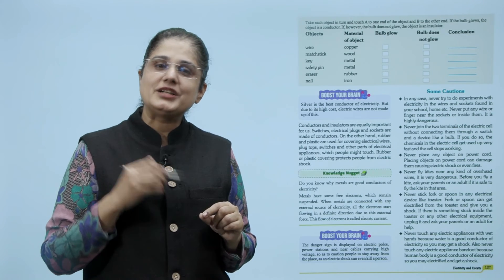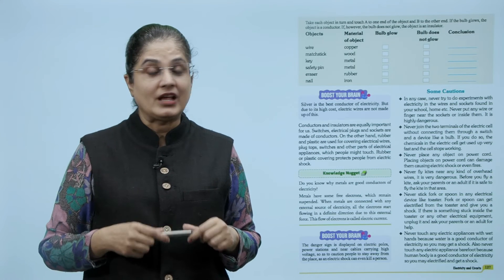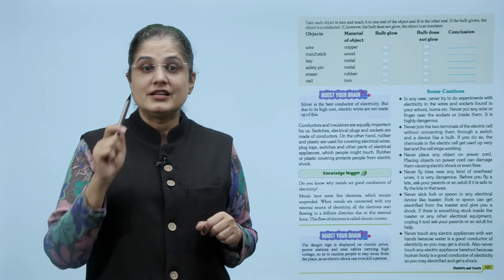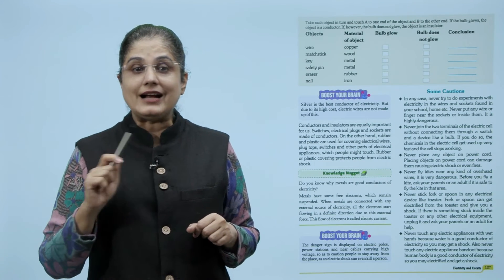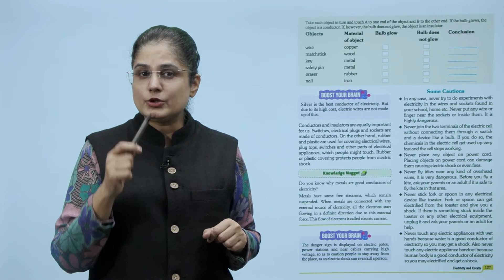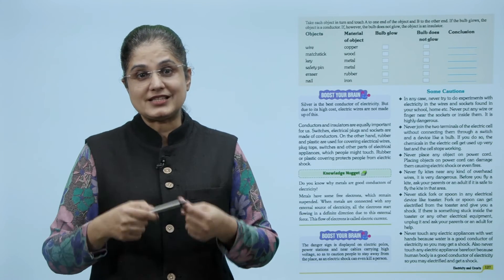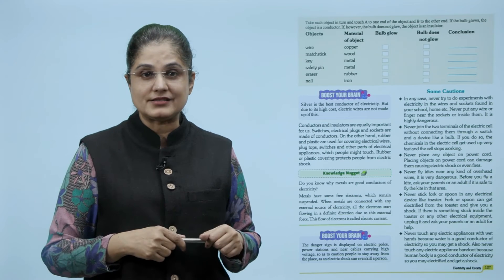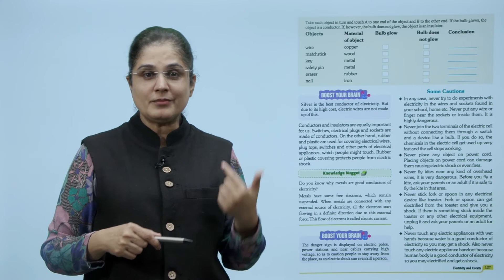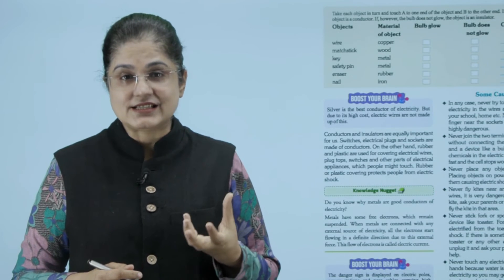Now conductors and insulators are equally important for us. Switches, electrical plugs and sockets are made of conductors. On the other hand, rubber and plastic are used for covering electrical wires, plug tops, switches and other parts of electrical appliances which people might touch. Rubber or plastic covering protects people from electric shock.